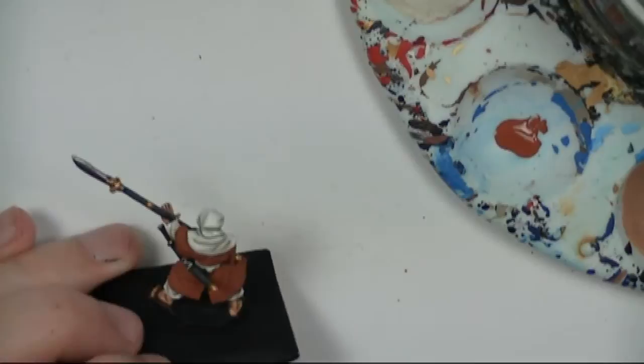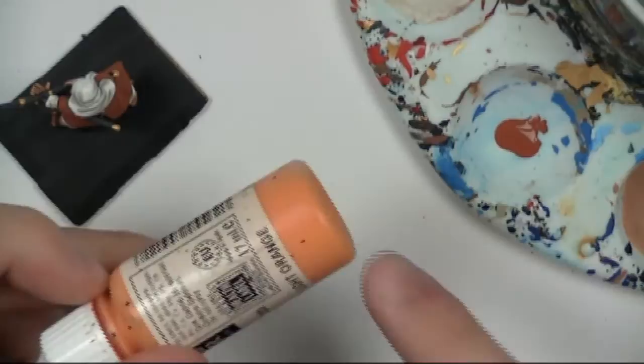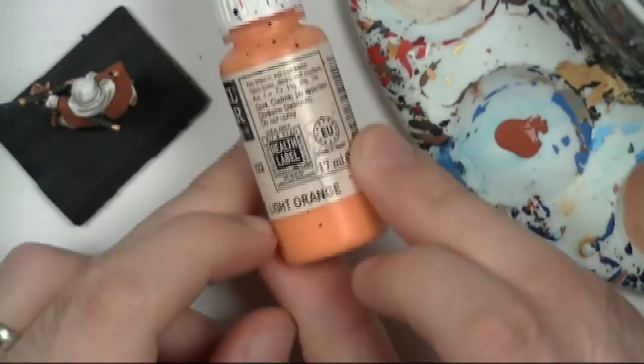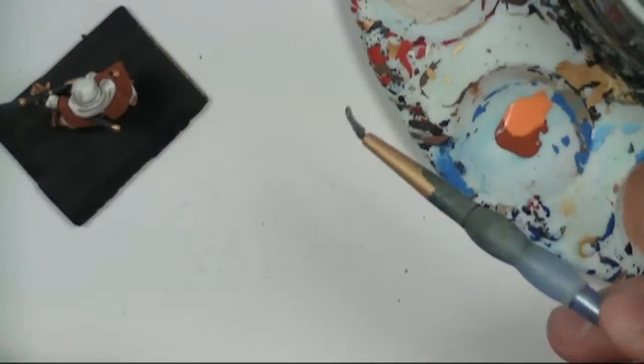Now what I'm going to do is take Vallejo Light Orange. Now this is significantly lighter so I'm not going to highlight straight over it with this. I'm actually going to mix this in with this color here. Also, another reason for doing this is that I don't want it to be too neon, whereas this is quite a neon orange. As I say, it's going to be more of a pastel orange than anything.